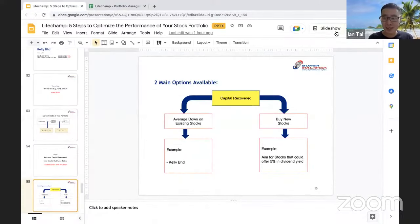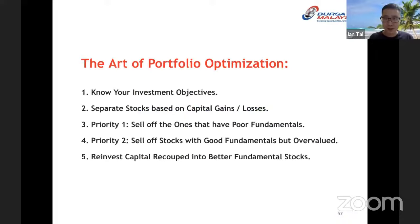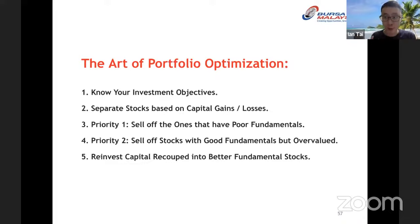Congratulations! Let me quickly recap the five steps. This is a systematic way to optimize your portfolio. Step one: review your investment objectives and systems. Step two: separate capital gain stocks from capital loss stocks. Step three: if a stock has poor fundamentals, sell it off first. Step four: even for good fundamental stocks, if you bought at a very overvalued price and it remains overvalued, consider selling. Step five: reinvest the capital you recovered into better fundamental and valuation stocks.